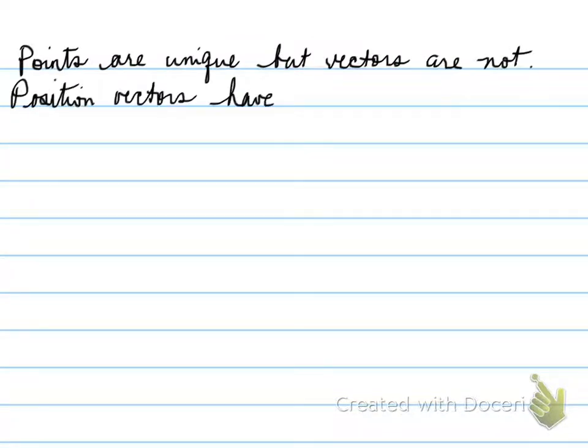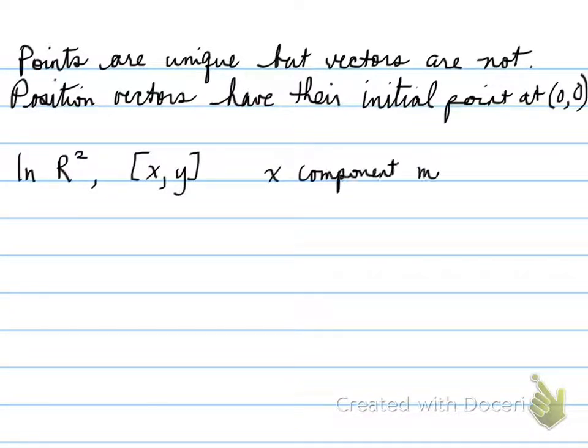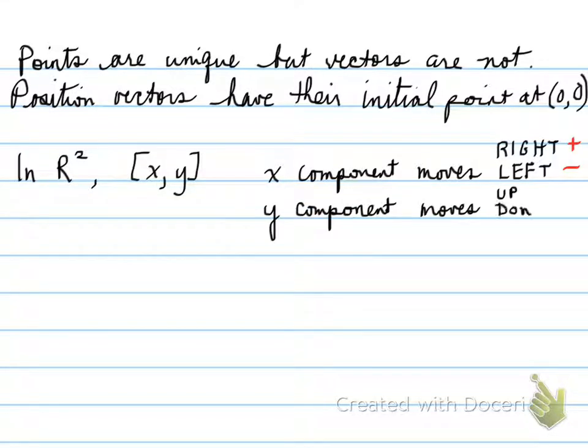Points are unique, but vectors are not. Position vectors have their initial point at (0,0). And in R², [x,y], the x component moves right if it's positive, left if it's negative, and y component moves up if it's positive, down if it's negative, and we're used to this.